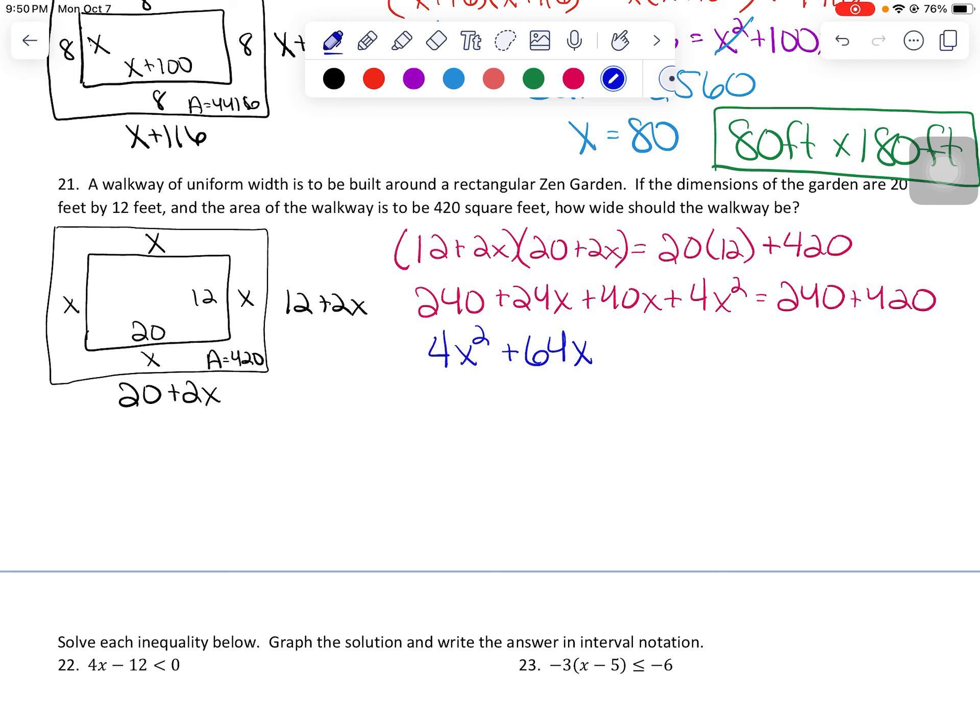So 4X squared plus 64X minus 420 equals zero. Conveniently, everything here is divisible by four. That is a nice thing. So if I divide everything by four, that's going to get me X squared, 16X minus, what on earth is 420 divided by four? That is 105 equals zero.